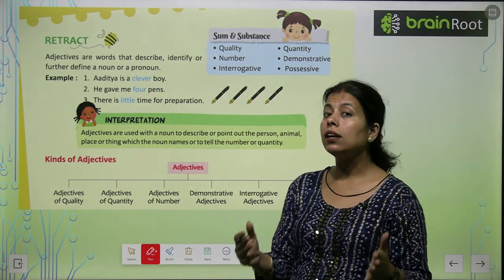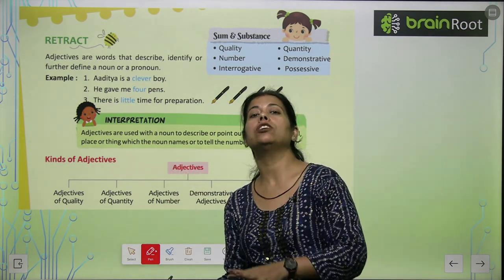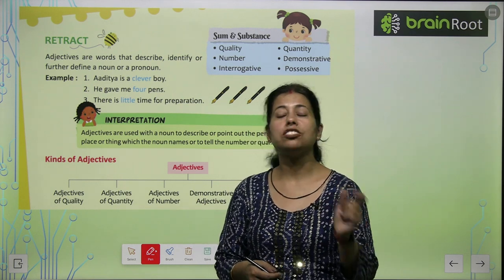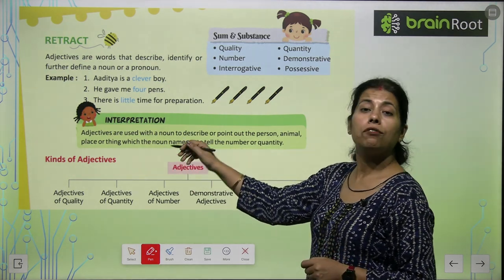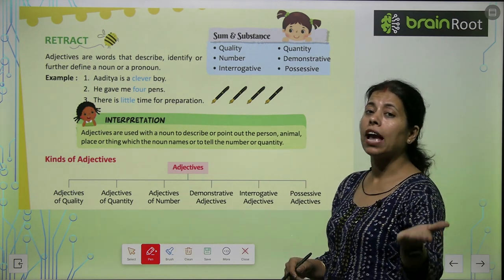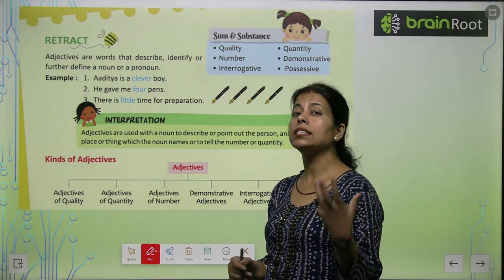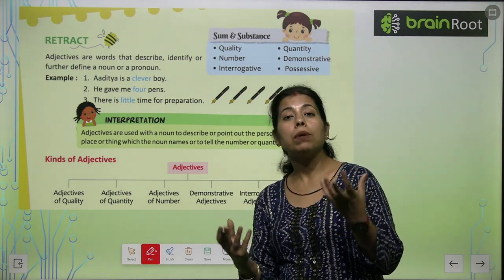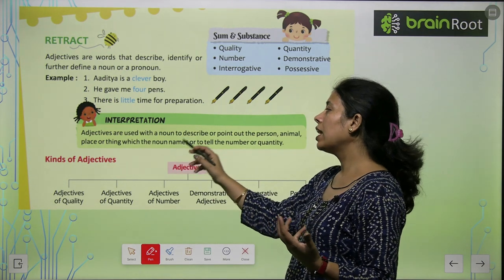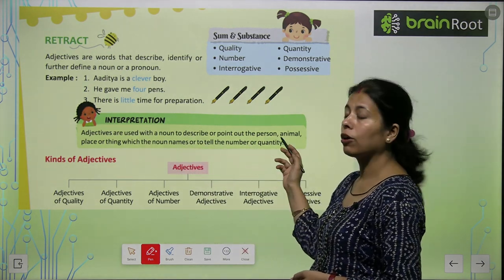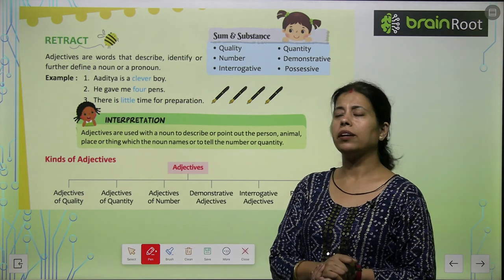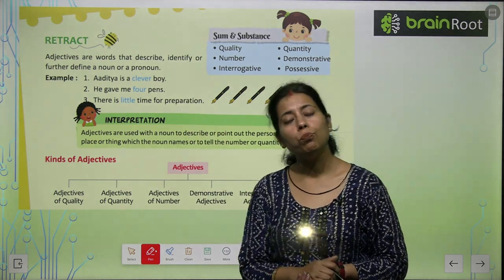He is a very intelligent boy. He is a very smart boy. Smart, intelligent — all those words are called adjectives. Adjectives are used with a noun to describe or point out the person. किसी person को, किसी animal को point out करना। Delhi is a very big city — and 'big' here is the adjective. To tell the number or quantity — या फिर किसी quantity के बारे में बताया — तो इसे हम adjective बोलते हैं।